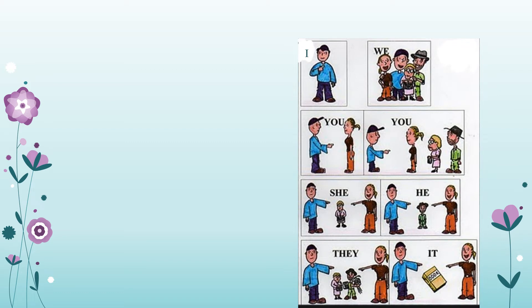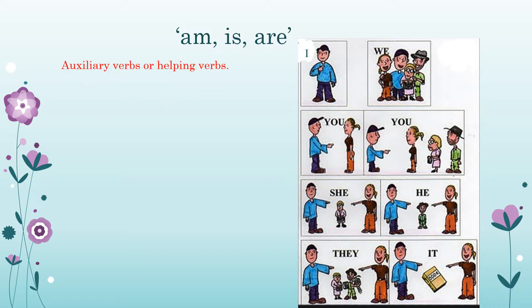Children, we have already learned about pronouns. What are pronouns? Pronouns are words which are used in the place of nouns, like I, we, you, she, he, they, it. Let us come to today's topic which is am, is, are. These words are auxiliary verbs or helping verbs.